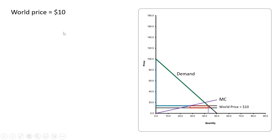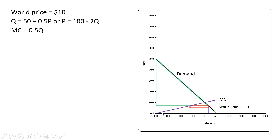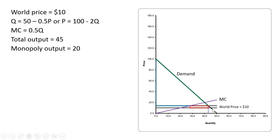Let's look at this graphically. The world price is $10, which is the horizontal line at the bottom. Here is the monopolist demand equation — solving for P, the inverse demand — with a vertical intercept of 100 and a horizontal intercept of 50. The marginal cost is 0.5Q, which is the line from the origin. The total output is 45, where the world price of $10 intersects the demand at 45 units. The monopoly output is 20, where the world price intersects the marginal cost, so the difference between 20 and 45 is the number of imports.